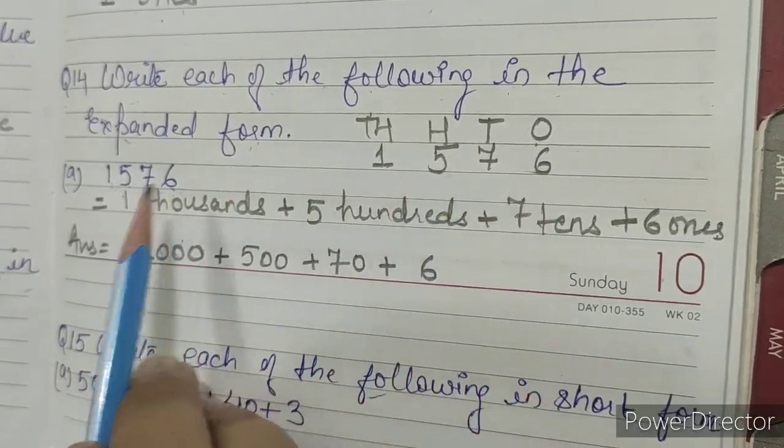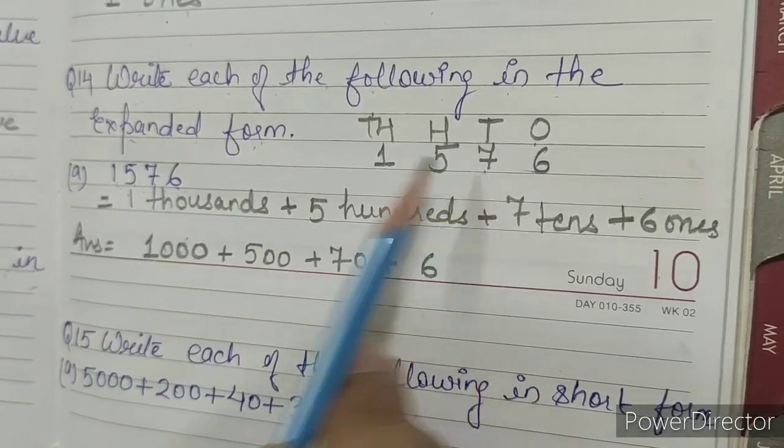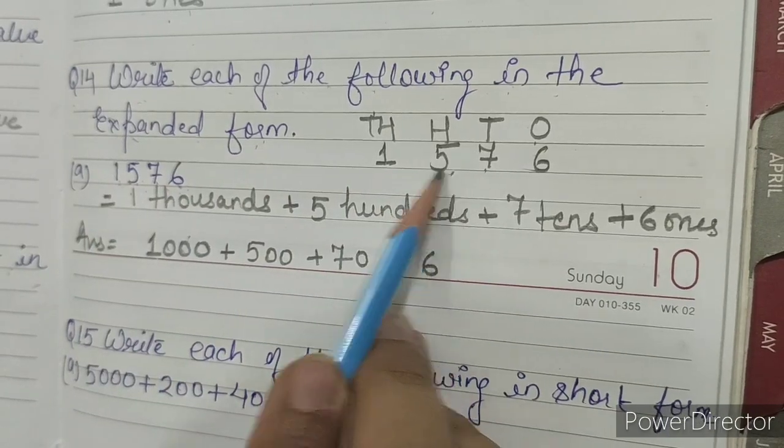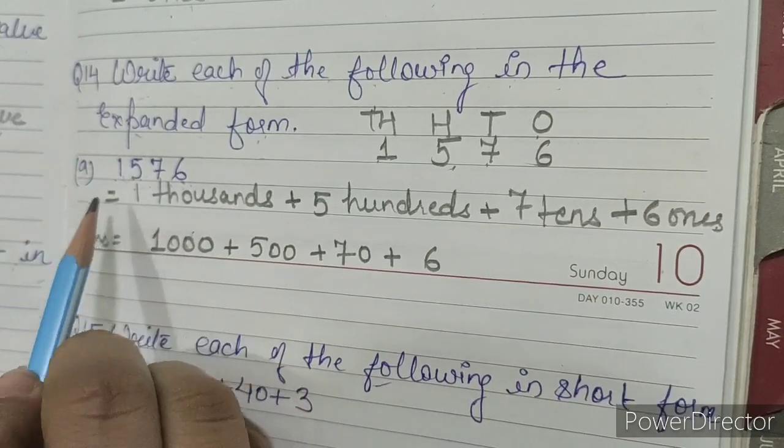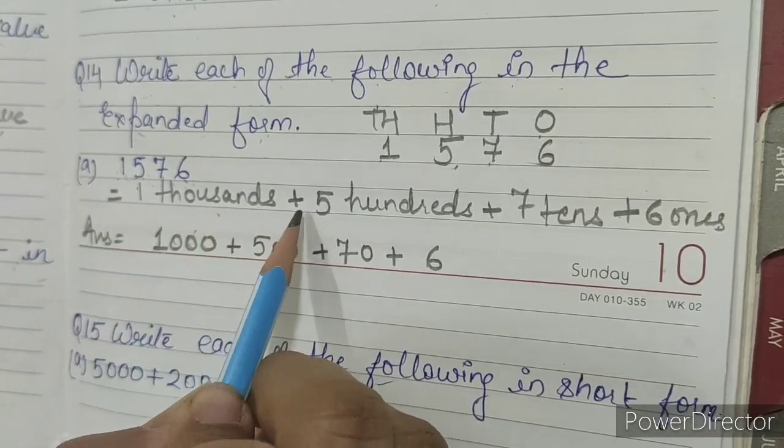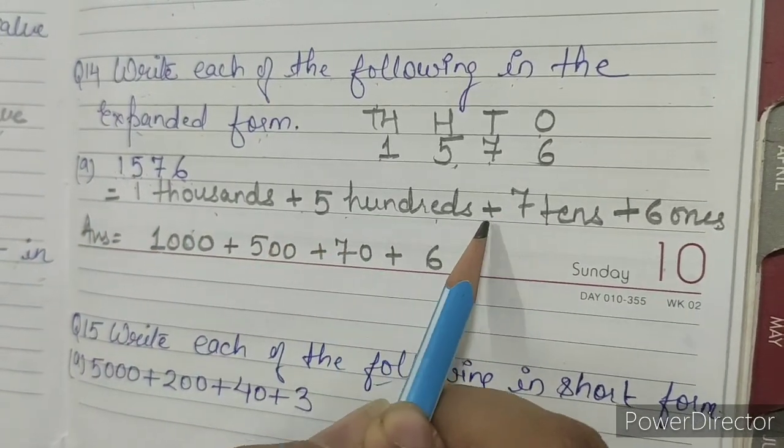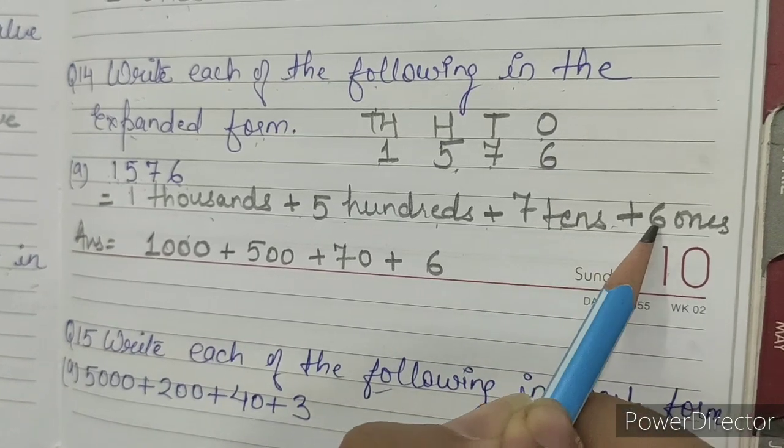Six is in the ones place, seven in the tens, five in the hundreds place, one in the thousands place. One thousand plus five hundreds plus seven tens plus six ones.